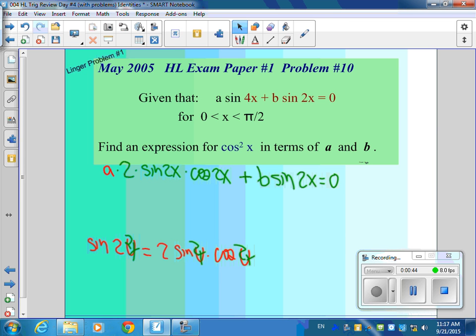Now why did I do it that way? What am I thinking of doing next? We could break these down again, couldn't we? Before you do that, though, does anybody see something that might make our lives a little easier before we change these all into 2 sine x, cosine x, and so on?